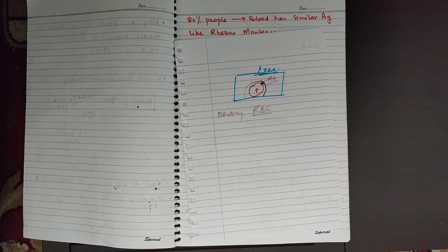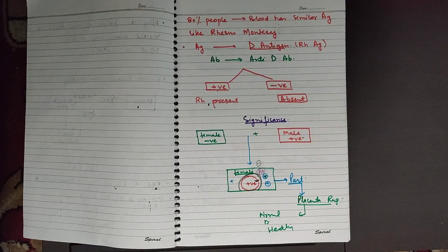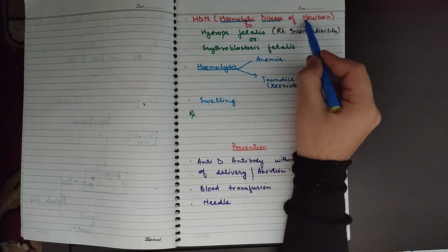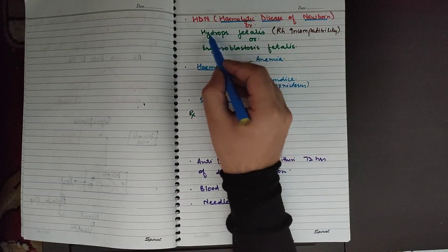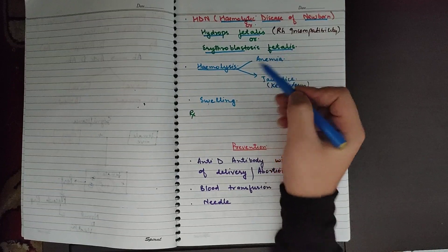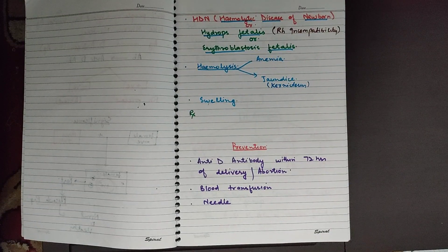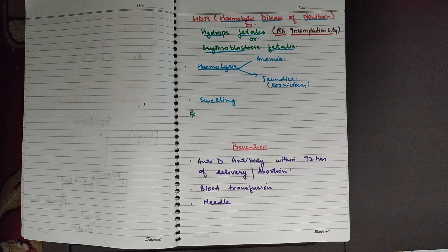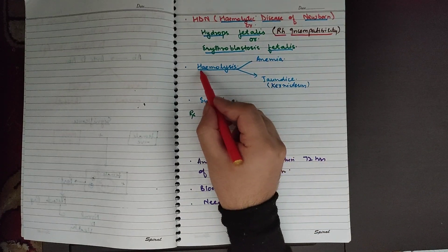To summarize: the first pregnancy is normal, but the female becomes sensitized and produces antibodies. In the second pregnancy, the child cannot survive because the antibodies will cross the placenta and destroy the fetal RBCs. This disease is known as hemolytic disease of the newborn. It is also known as hydrops fetalis or erythroblastosis fetalis — different names for the same disease, which is a severe case of RH incompatibility.